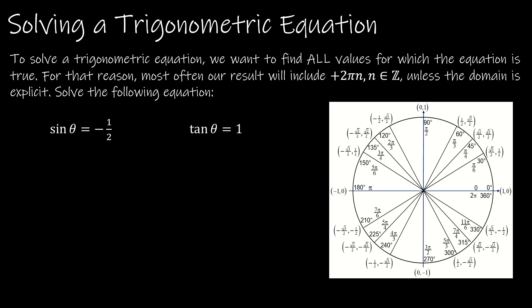We'll start with two pretty straightforward examples. The first is super straightforward; the second is a little harder. A lot of solving these has to do with how well you know your unit circle — I've copied it here. This equation says sin(θ) = -1/2. Each ordered pair on the unit circle is (cos θ, sin θ), so I'm looking for where the y-value is -1/2, which is at 7π/6 and 11π/6.